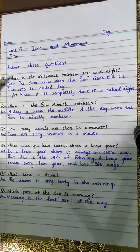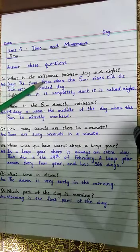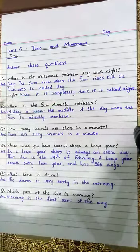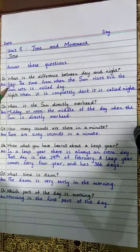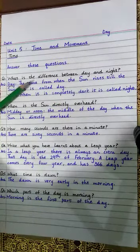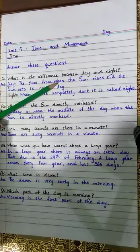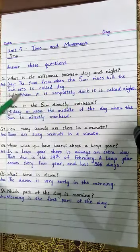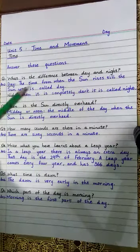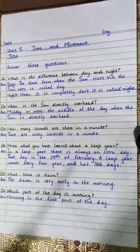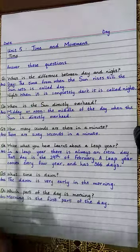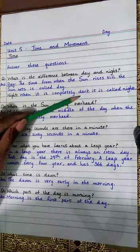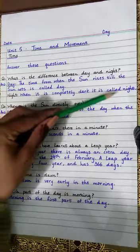Question number 1. What is the difference between day and night? Answer — Day: the time from when the Sun rises till the Sun sets is called day. Night: when it is completely dark it is called night.